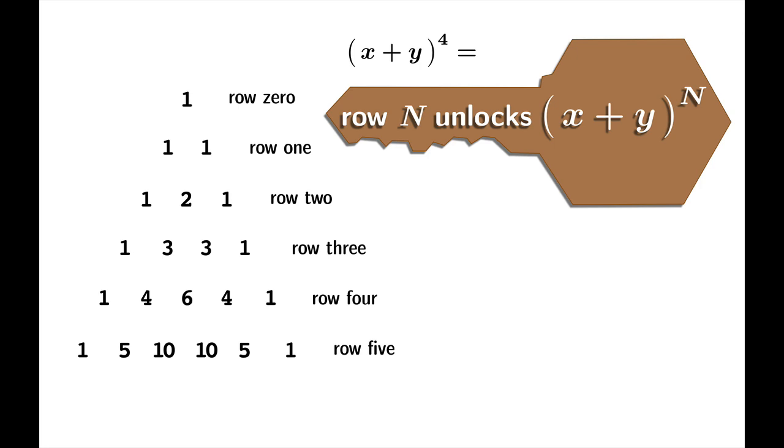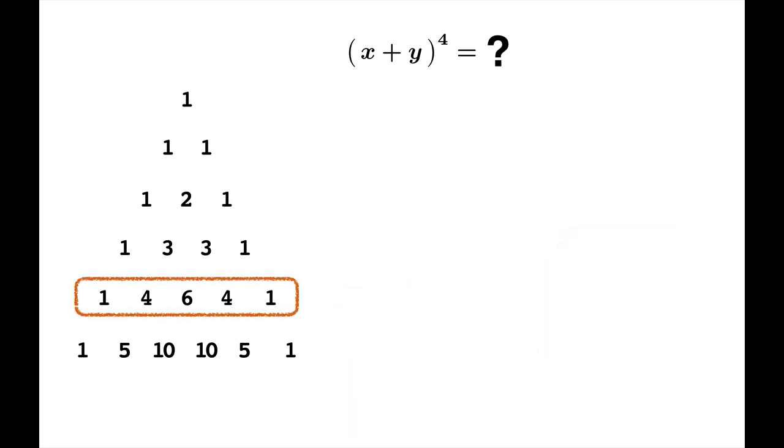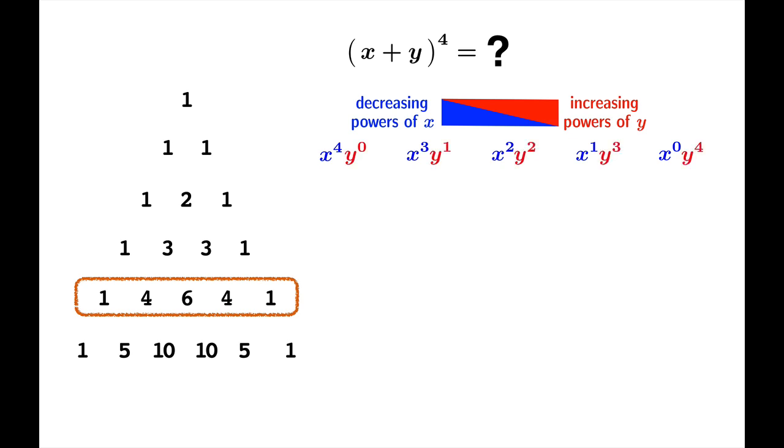Let's look at an example. Suppose we want to expand x plus y to the fourth. We should move to row four, and the claim is that row four unlocks x plus y to the fourth. There's another part of the pattern, which is the powers of x and y that show up. We're going to have decreasing powers of x, starting with the highest power, x to the fourth, and we'll go down to the zeroth power. Meanwhile, there should be increasing powers of y. Please notice that for each term, the sum of the exponents adds up to four, which is the overall power that we're trying to expand.